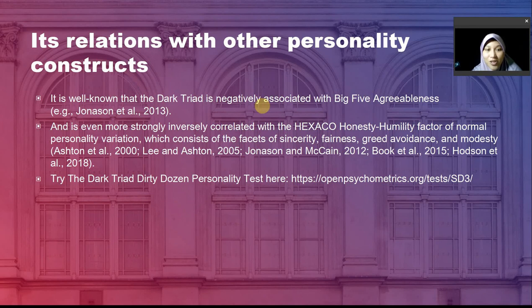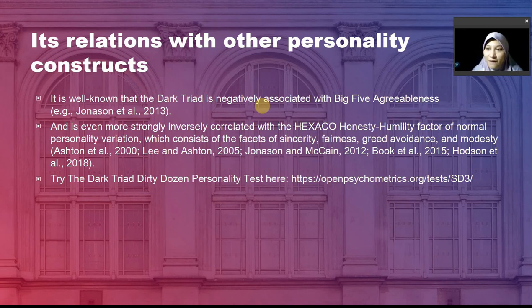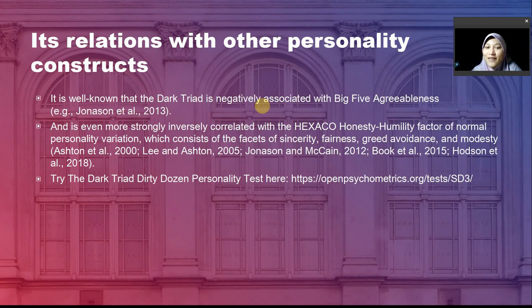Dark triad dimensions are also strongly inversely correlated with the HEXACO honesty-humility dimension. This makes common sense and is well supported by data — those two traits are completely contradictory. Honesty-humility consists of facets of sincerity, fairness, and other good virtues, which is why it is strongly negatively correlated with dark triad traits.